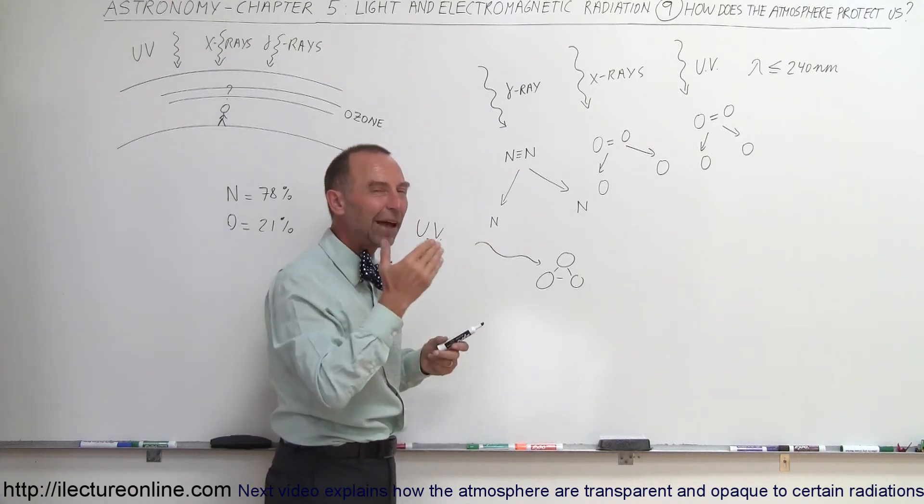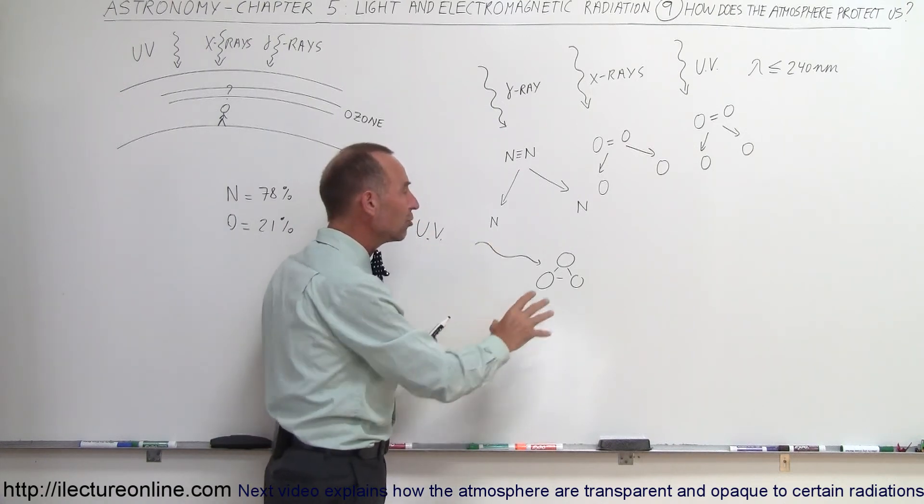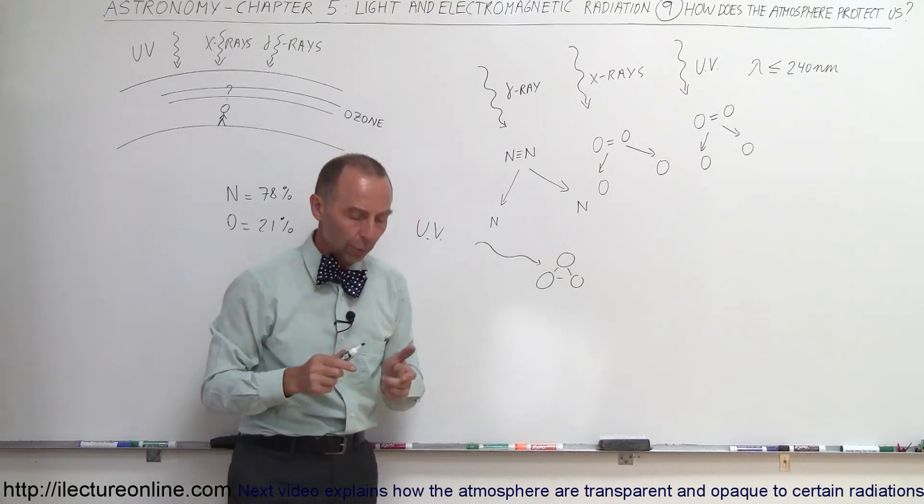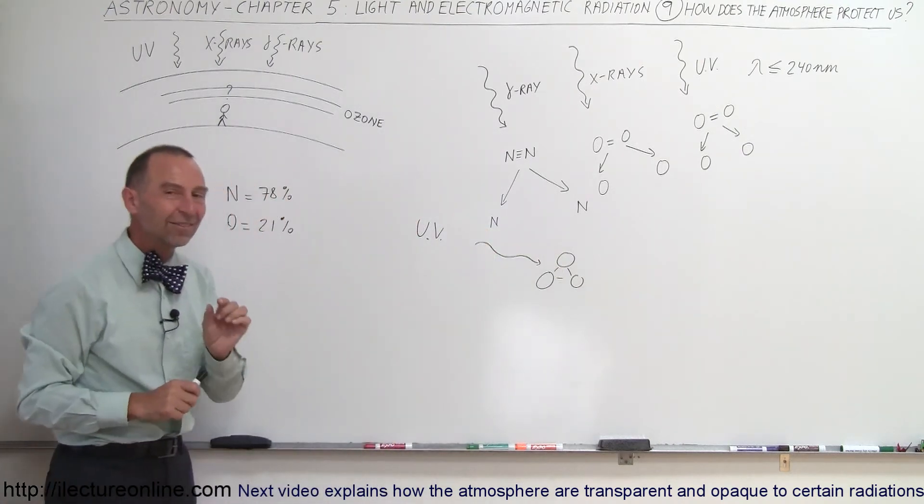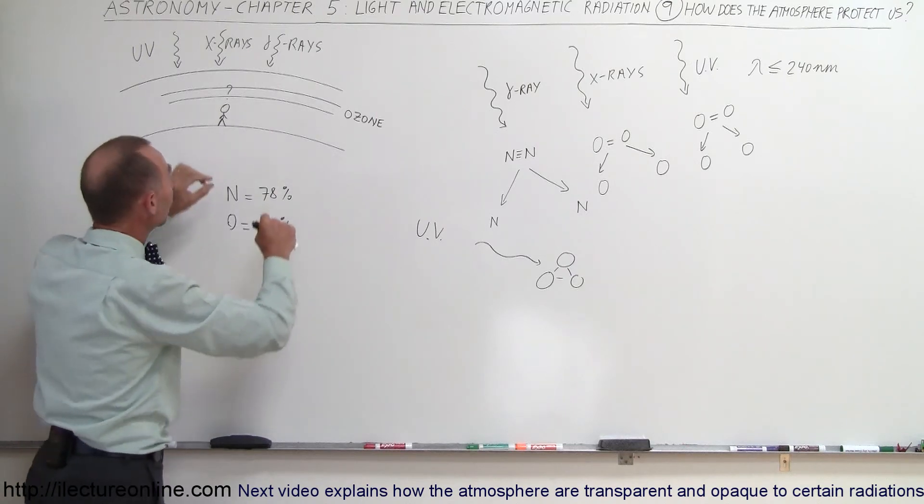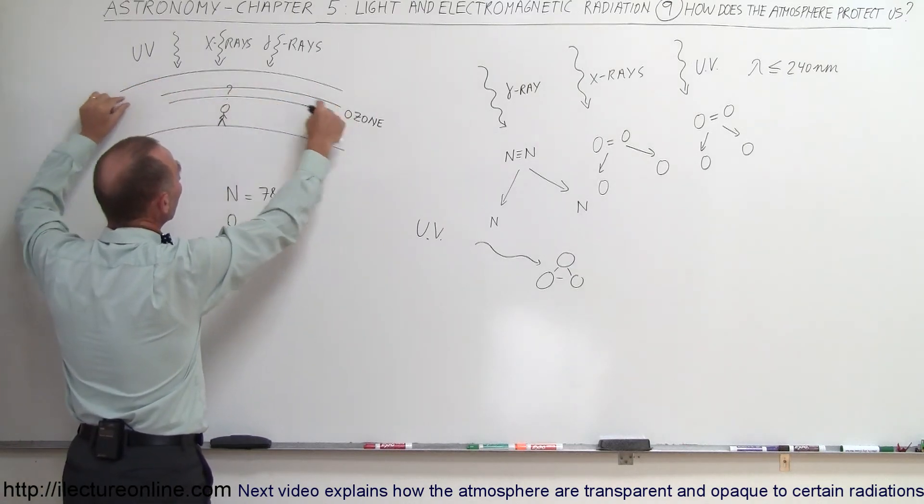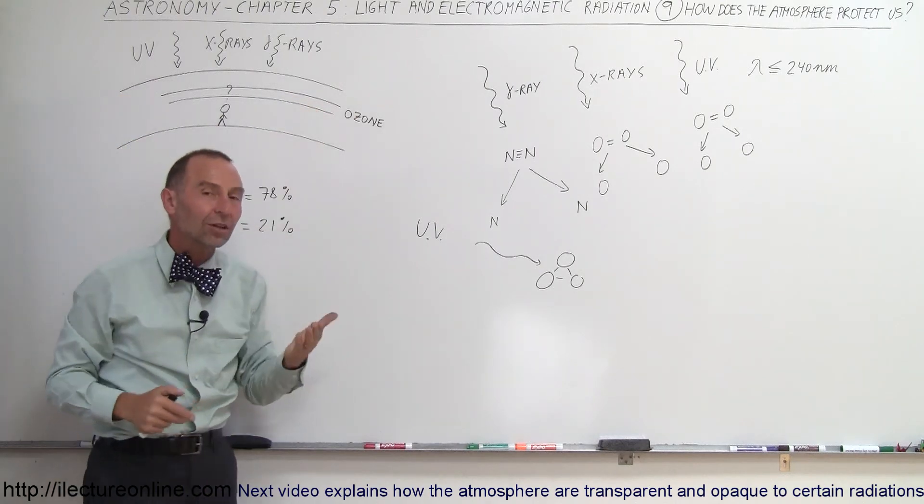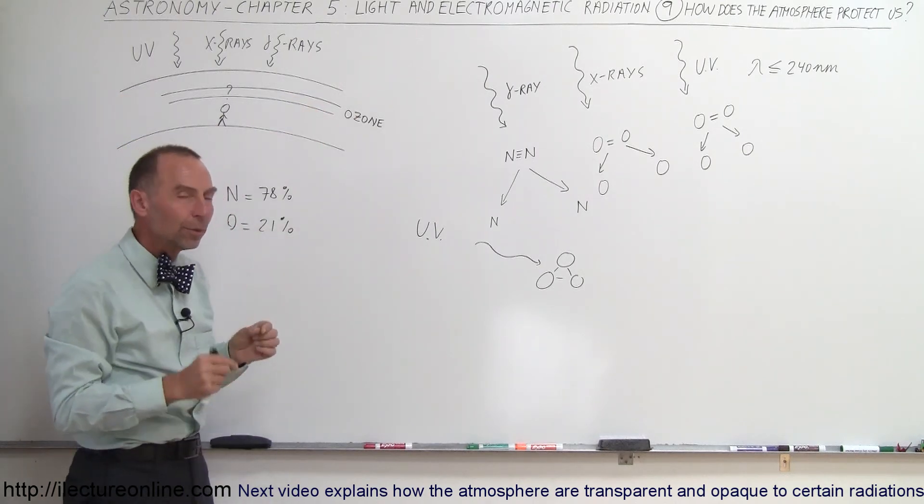Therefore, the vast majority of the UV radiation is stopped by those ozone molecules. Since there is far less ozone in the atmosphere than nitrogen and oxygen, it's just a very thin layer, a very small region, not 100% of that UV radiation is absorbed.